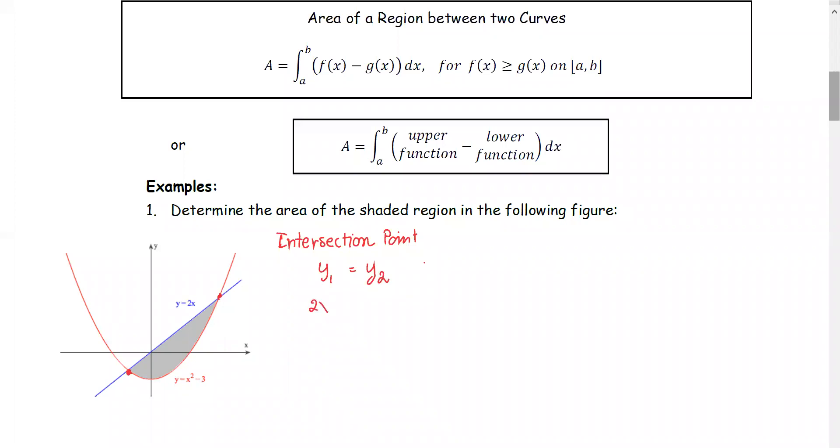y1 is 2x, y2 is x squared minus 3, and solve the quadratic equation.